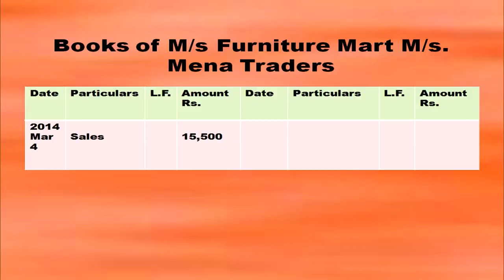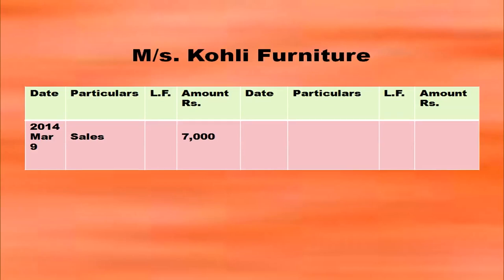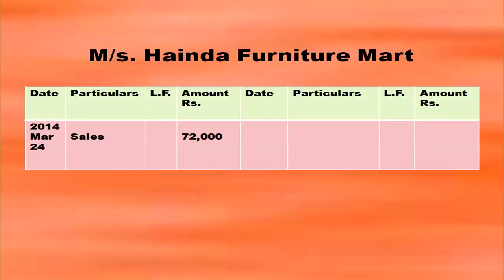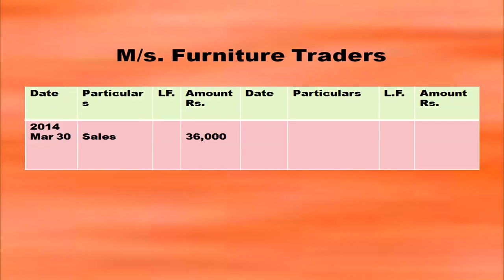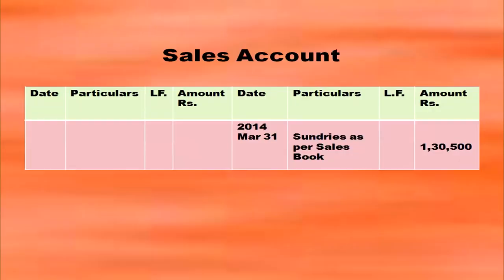Here are the debtors' ledgers in the books of Messrs Furniture Mart. For each customer such as Mina Traders, Kohli Furniture, and others, on the debit side in the particulars column write 'To Sales Account' with date and amount in the respective columns. In the sales account, on the credit side in the particulars column, write 'By Sundries as per Sales Book', with date and the total sales of Rs. 1,35,000 in the amount column.